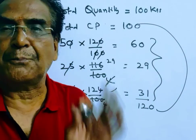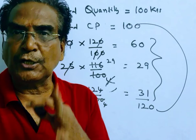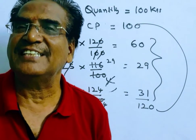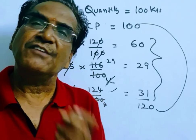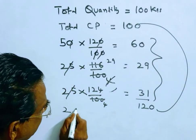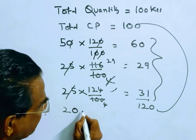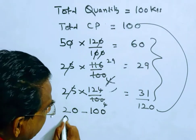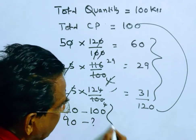Friends, if 20 rupees is the profit, cost price is 100. Friends, it is given that the total profit is 90 rupees. Then what is the cost price? Friends, if 20 is the profit, the cost price is 100. If 90 is the profit, what is the cost price?